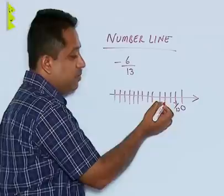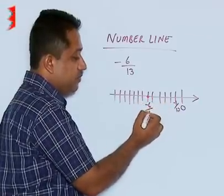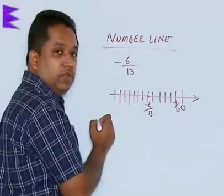This is minus 2 by 13, 3 by 13, 4 by 13, 5 by 13. We find that the sixth portion will be minus 6 by 13.